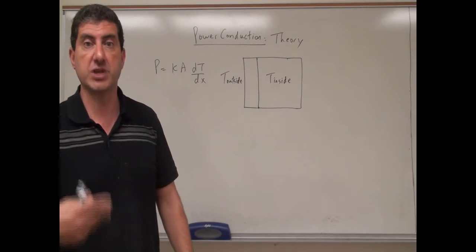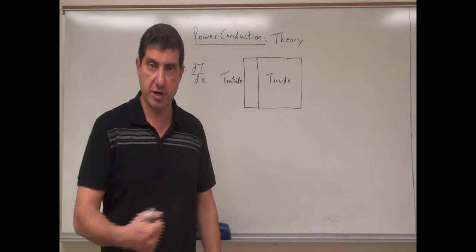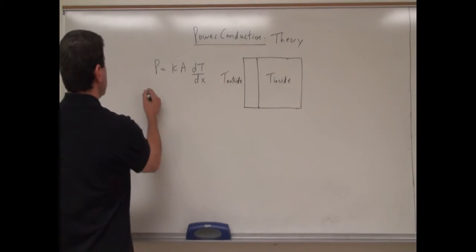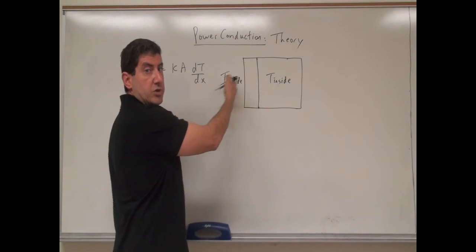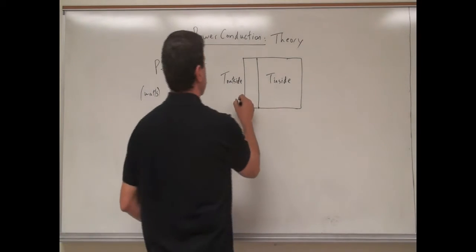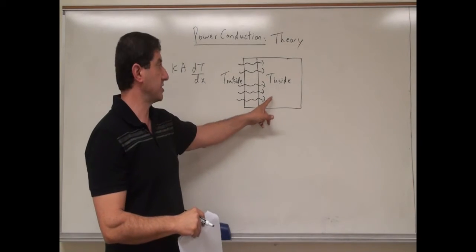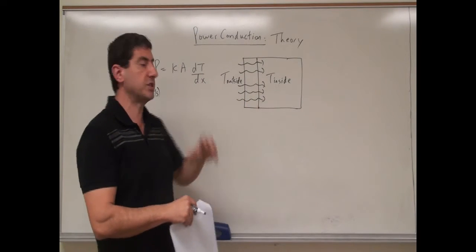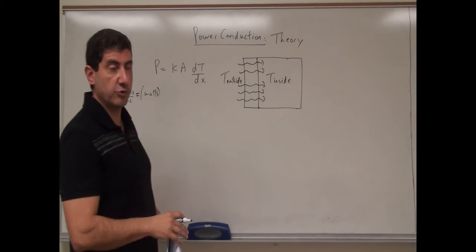I'm going to explain this and then give you some examples of the conductivity of different materials. In the next video we'll talk about how conductors add up in series and parallel. The power is given in watts — this is the power transmitted from the inside to the outside, or from the outside to the inside, depending on which side is warmer. This tells you how much heat is flowing per unit time. Watts is measured in joules per second.